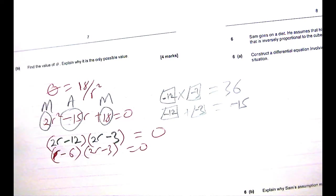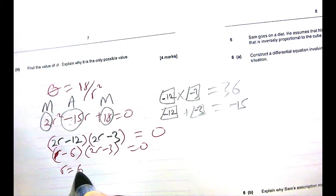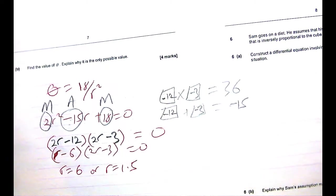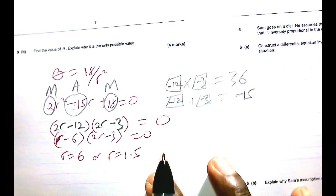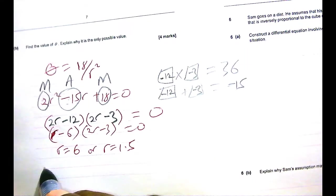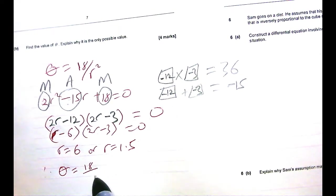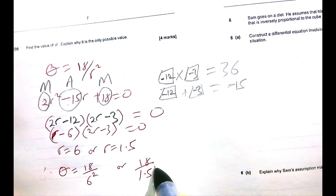Good. So if this is what we have when we solve for R, we can see therefore that R is either 6 or R is 1.5. Now we have 2 values for R. We should be able to solve for θ now. Therefore, θ is 18 over 6² or 18 over 1.5².